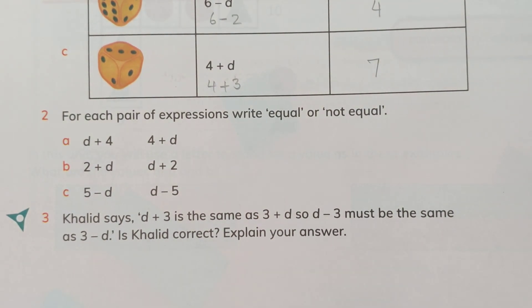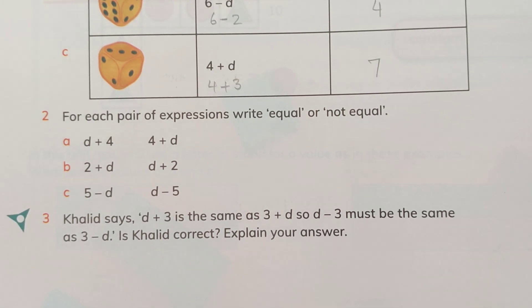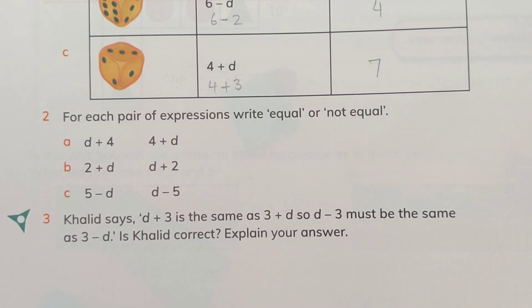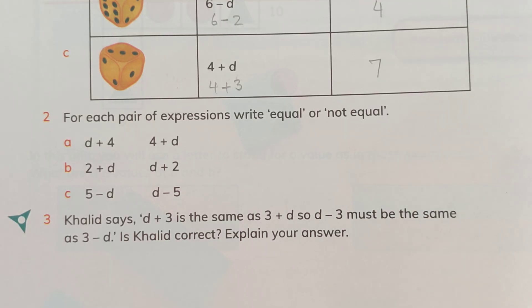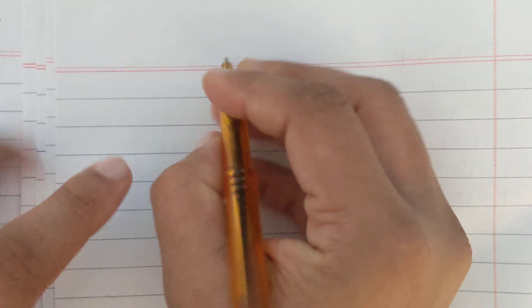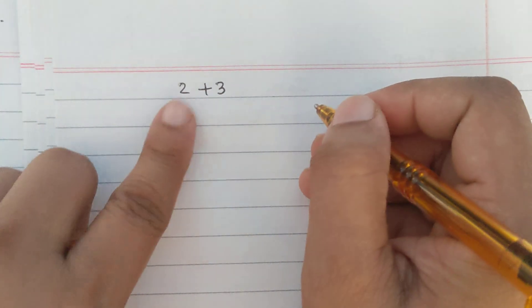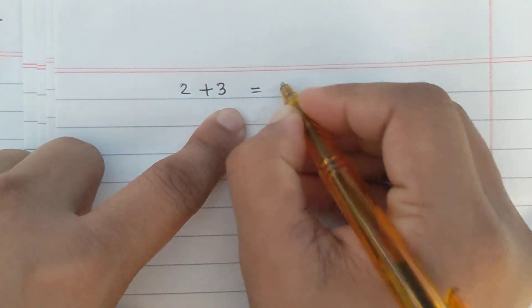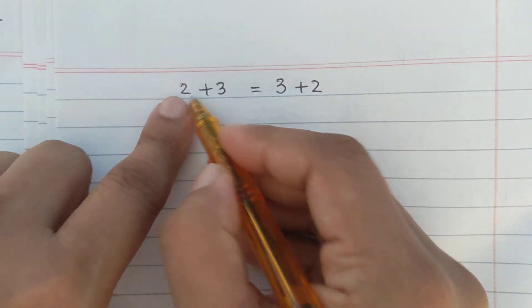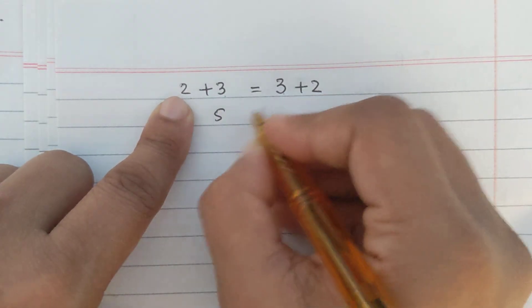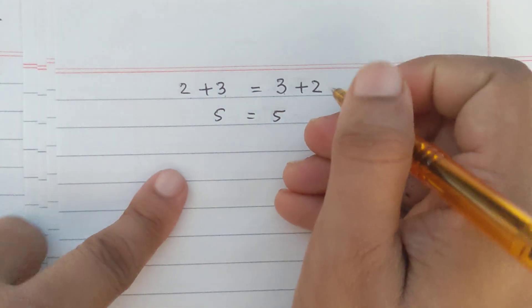Before moving to question number two, let me tell you about the commutative law of addition. This law says that when you add two values, the sum will be equal whether the numbers are written in the same order or not. For example, if we have 2 and 3, adding 2 plus 3 gives the same answer as 3 plus 2. So 2 plus 3 equals 3 plus 2, because both equal 5.